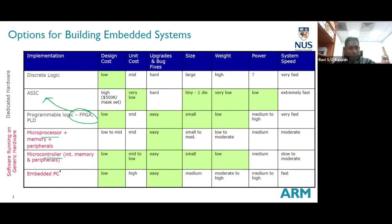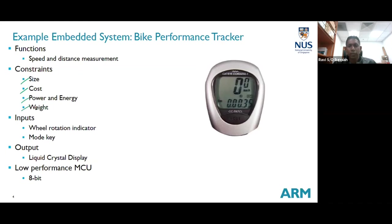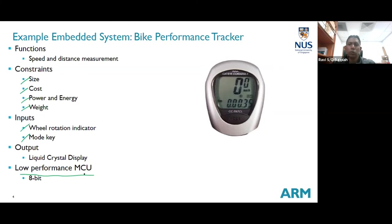Take a bike performance tracker as an example. If you ride a bike you may have a device that measures your speed and distance. The constraints are size, cost, power consumption, and weight. Inputs are wheel rotation signals, you may have buttons to set the mode, and output is a simple LCD display. You don't need a very high-performance system — just a simple low-performance microcontroller to perform this task. This is an important thing to understand: as a student it's easy to go for the best, but in reality people always go for the lowest-grade system that can still meet the requirements, because that keeps costs down and profits up.